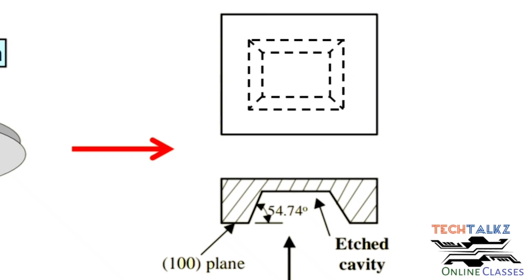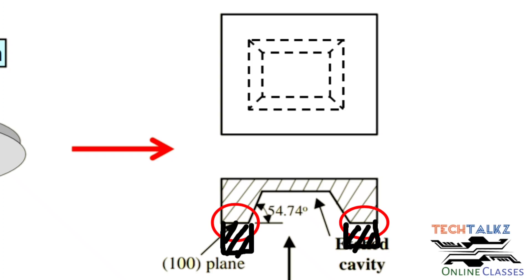A micro-cavity is formed in this etching process. Mask layers are used to protect certain portions. Silicon nitride and silicon dioxide can be used as mask materials to protect the substrate.